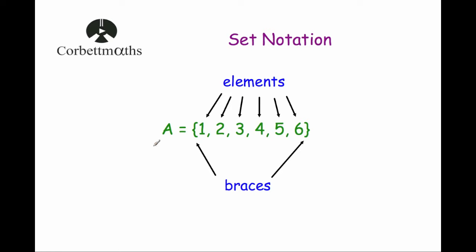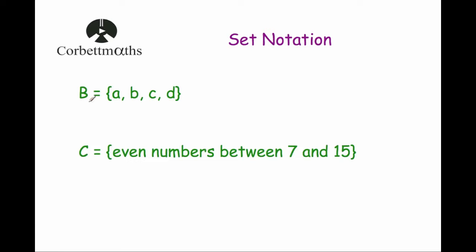So let's have a look at our first set. We've got the set A which is the numbers 1, 2, 3, 4, 5 and 6. Each of these numbers is called an element of the set A or a member of the set A, and the curly brackets at the front and end are called braces. Here's the set B. The set B is the lowercase letters A, B, C and D. So this set B has 4 elements or members and they are A, B, C and D.